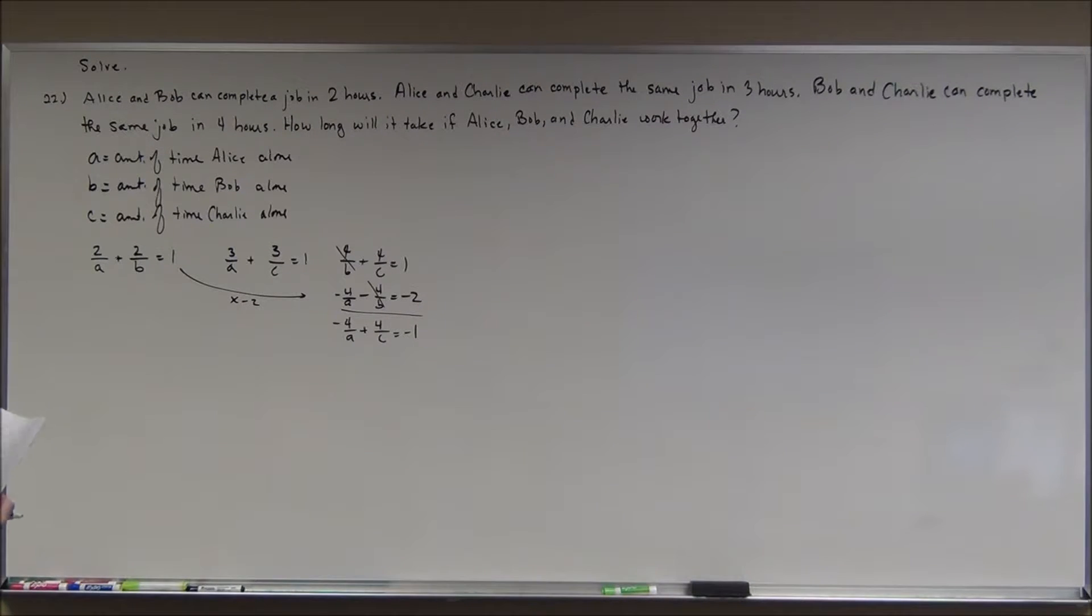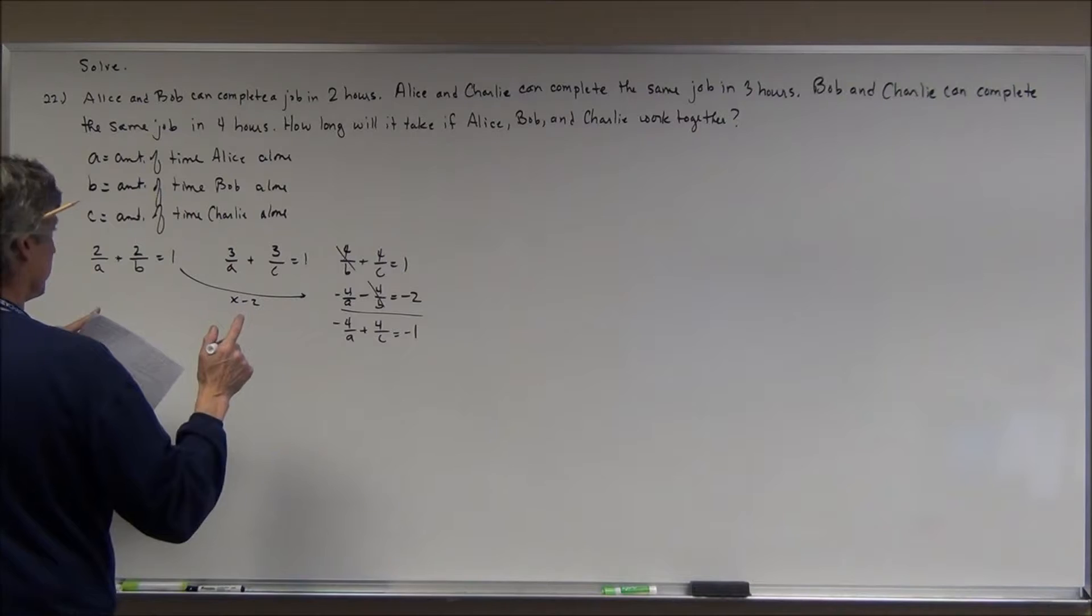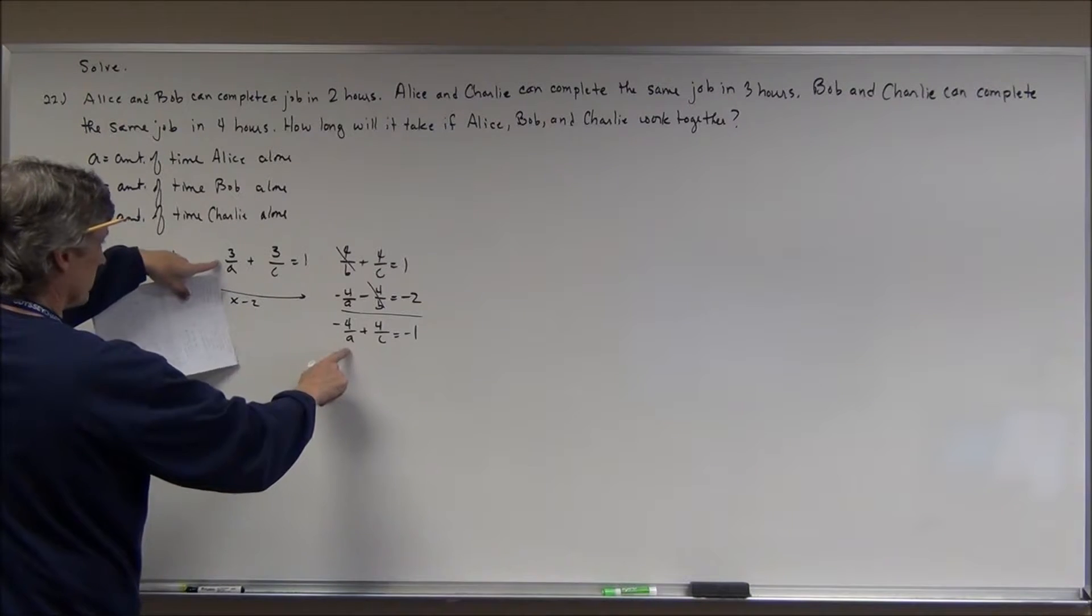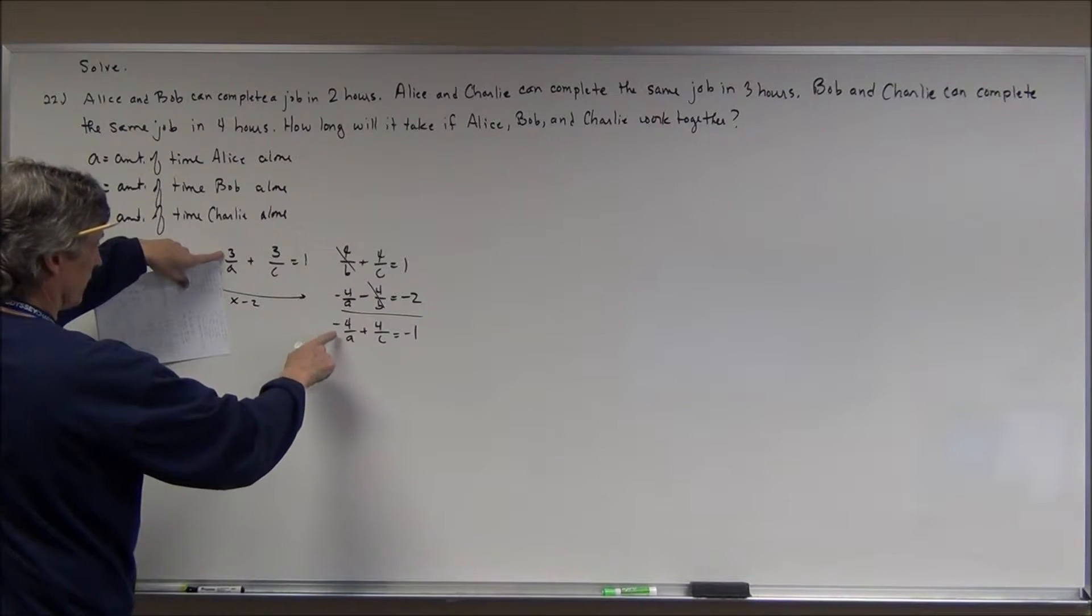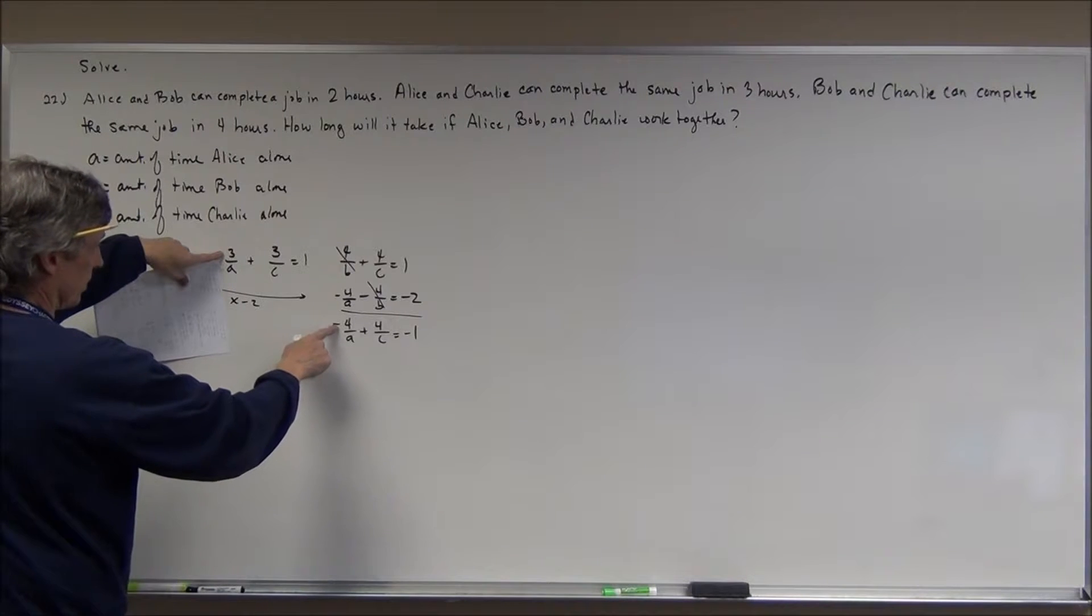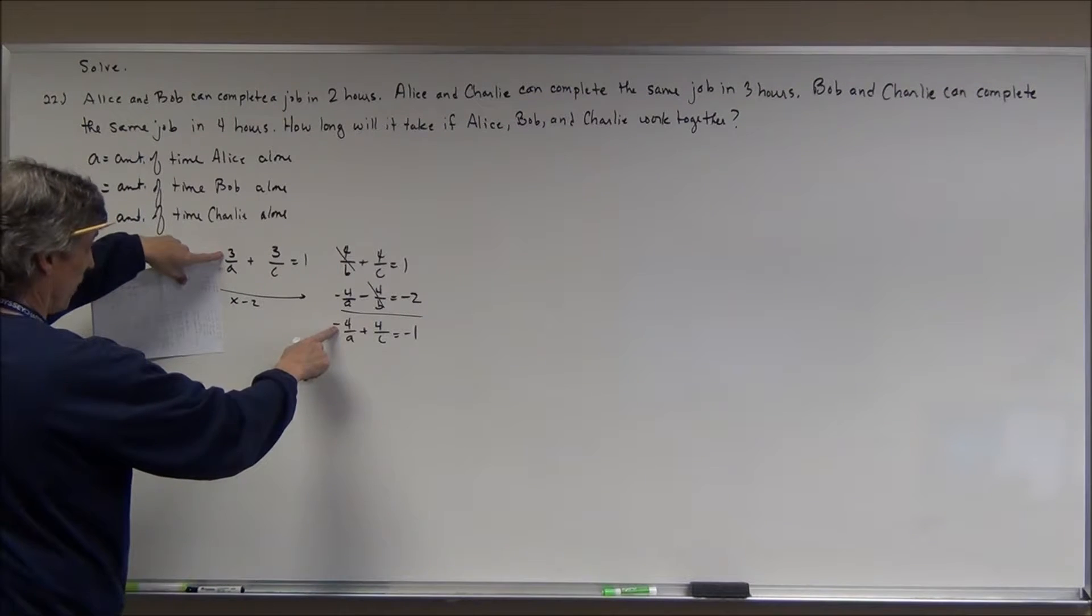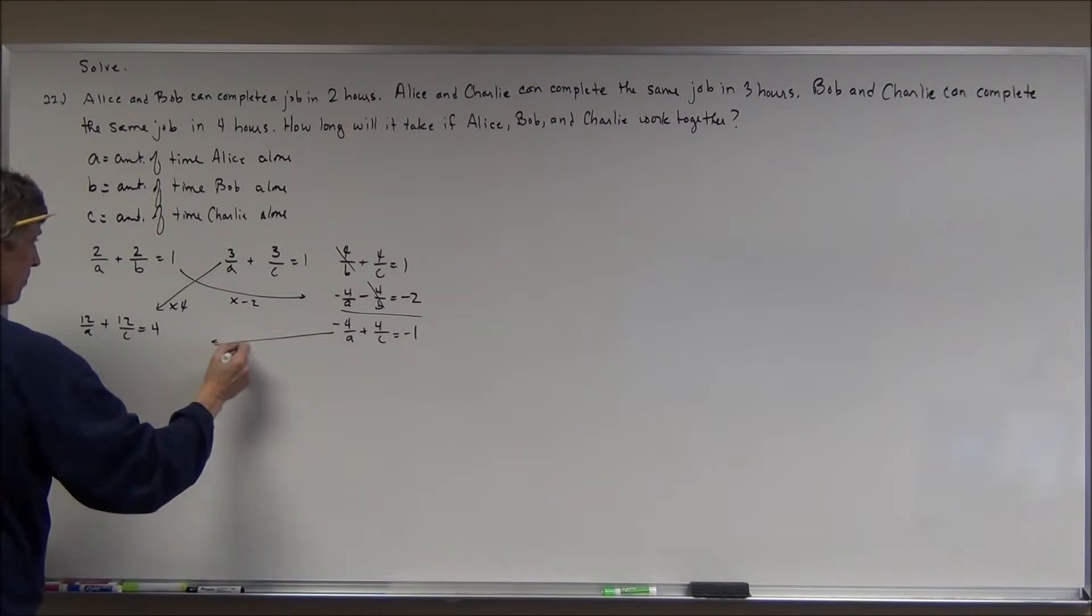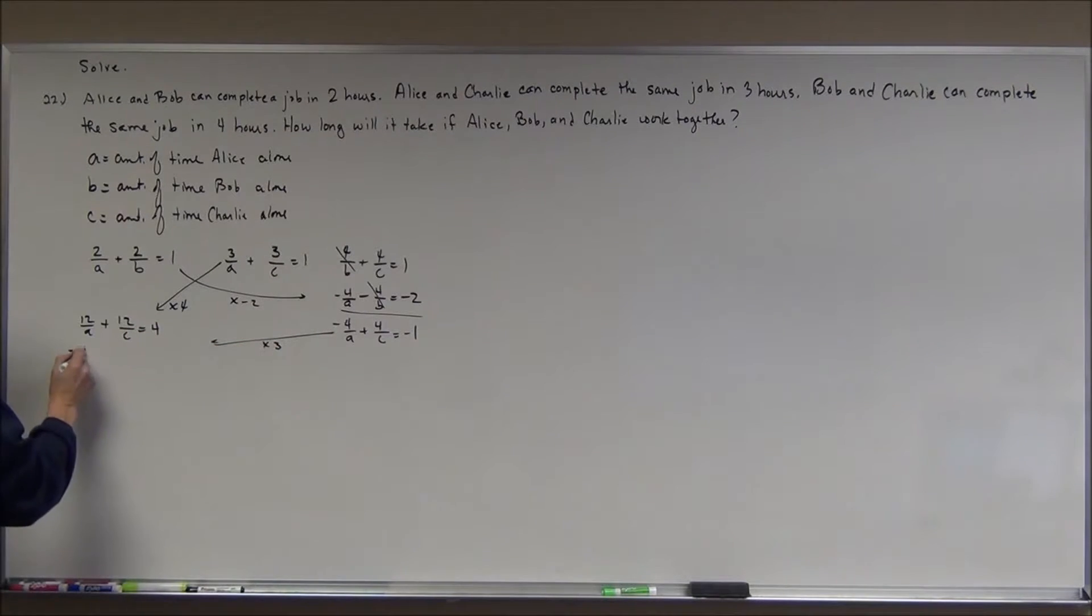Now, I'm going to get rid of the A's. I'm getting rid of the A's because this one's positive and this one's negative, but the least common multiple would be 12. So, I've got to take this one, I've got to multiply it by 4 and I get 12 over A plus 12 over C equals 4. In this one, I've got to multiply it by 3 and I get negative 12 over A plus 12 over C is equal to negative 3.